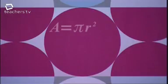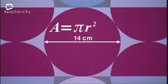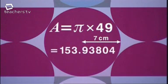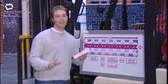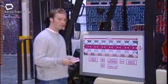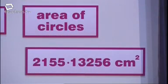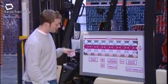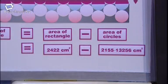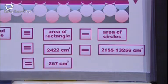The next step is to work out the area of the circles stamped out of the row. The area of each circle is pi r squared. The diameter is 14, so the radius is half of that, which is 7. 7 squared is 49, multiplied by pi is 153.93804. There are 14 whole circles in the row, so I need to multiply that by 14, which equals 2155.13256 centimetres squared. To work out the area of waste, I subtract the area of the circles from the area of the rectangle.